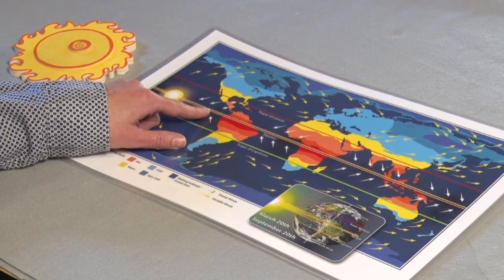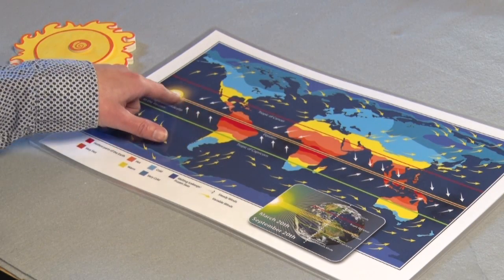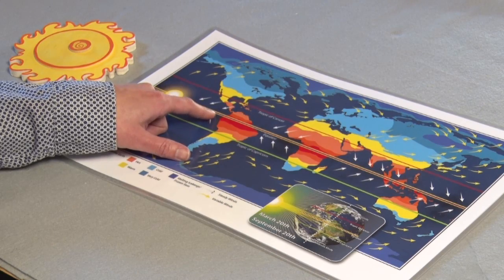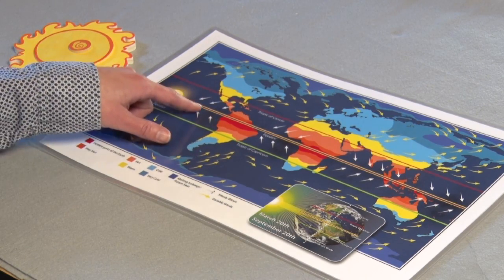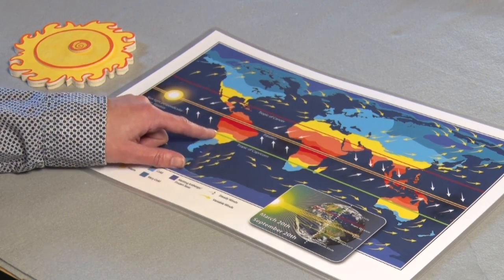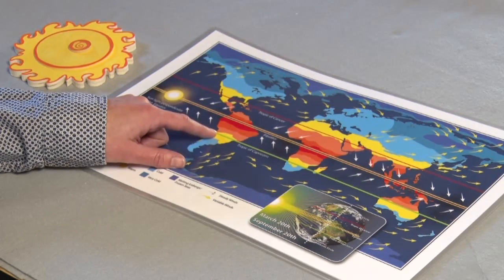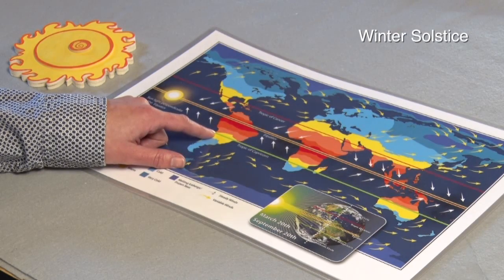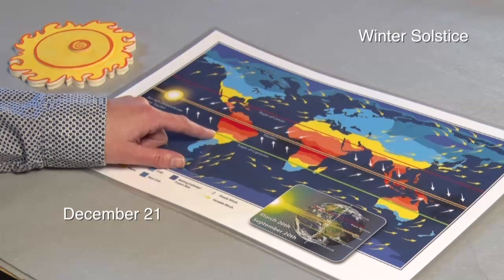From September 22nd, in the northern hemisphere, the Sun begins to travel towards the south, or the Tropic of Capricorn. When the Sun's rays reach the Tropic of Capricorn at a 90-degree angle, in the northern hemisphere we call that our winter solstice, and that is December 21st.